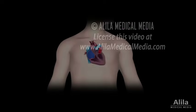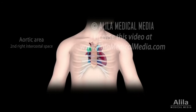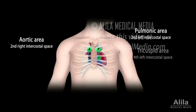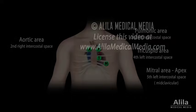Heart sounds are auscultated at four different sites on the chest wall, which correspond to the location of blood flow as it passes through the aortic, pulmonic, tricuspid, and mitral valves, respectively. This is how similar defects associated with different valves are differentiated.